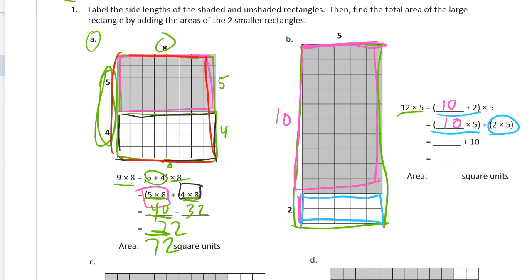The big one on the top is the 10 times 5 rectangle, which is the shaded one. The 2 times 5, that's 2 times 5 is 10. And the 10 times 5 is what goes in this blank here, that's 50. 50 plus 10 is what goes here, that's 60. 60 square units.